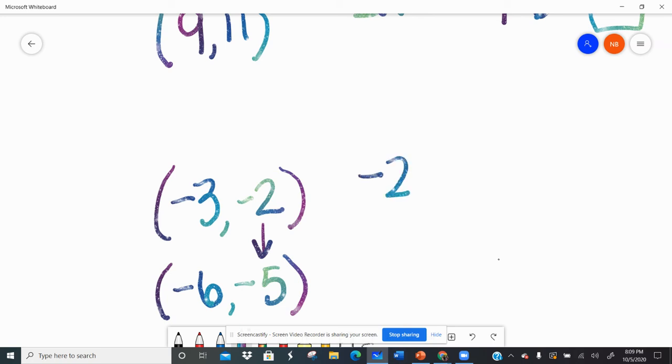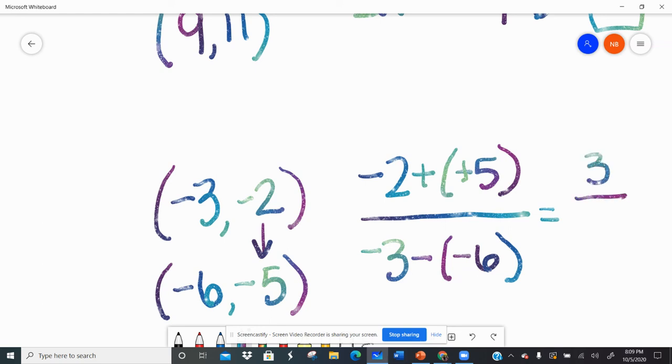So I'm going to do negative two minus negative five, and then because I started with that negative two, I go over to the corresponding x and I do negative three minus negative six. All right, I could use my Desmos calculator, I could use a handheld calculator, but I think we can handle this one. So keep-switch-switch. Different signs, so I subtract them. Five minus two is three, and I have more positives, so my answer is three. Keep-switch-switch.